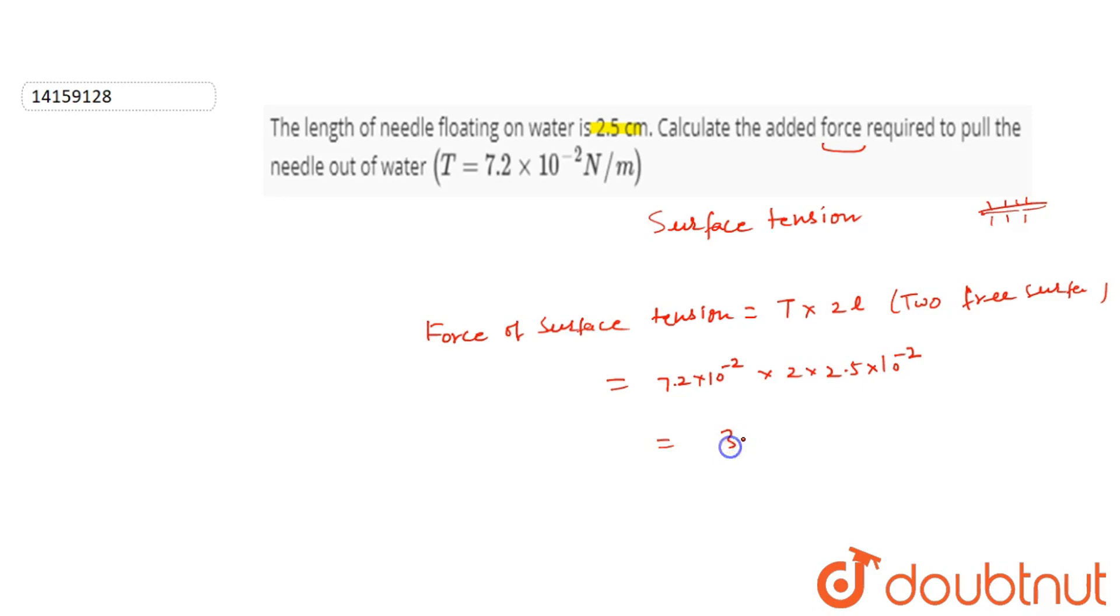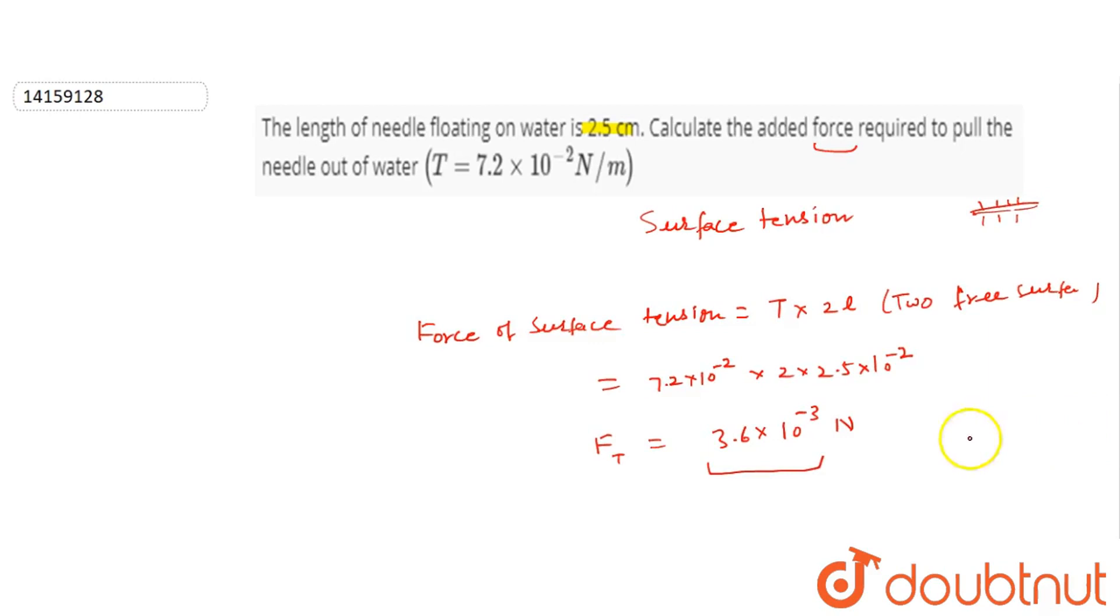3.6 × 10 to the power minus 3 N. So our surface tension is 3.6 × 10 to the power minus 3 N. So if we apply so much, we will be able to pull it out. This will be our final answer. Thank you.